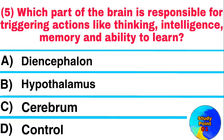Question: Which part of the brain is responsible for triggering actions like thinking, intelligence, memory, and ability to learn? Answer: Cerebrum.